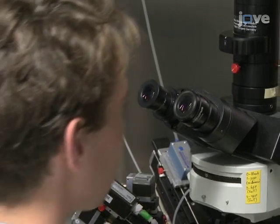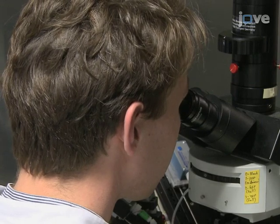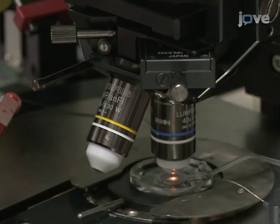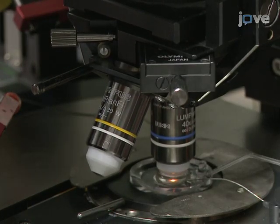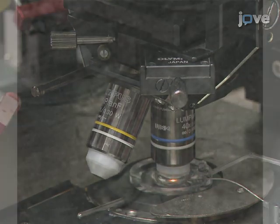Use a video camera to assess the slice quality under IRDIC optics at 40x objective magnification. Assume the slice is of good quality if a large number of round, moderately contrasted CA1 pyramidal cells can be seen in the stratum pyramidalae at depths of 20 to 30 micrometers below a smooth and lightly cratered surface.